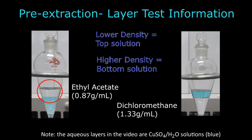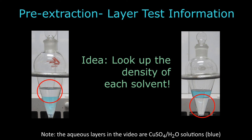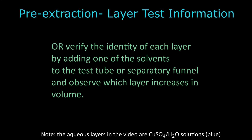Dichloromethane, however, has a density of 1.33 grams per milliliter, which means that when it is mixed with water, the organic layer composed of dichloromethane remains at the bottom, while the aqueous layer remains at the top. Be sure to look up the density of the organic solvent that you intend to use so that you can easily identify each layer. You can also verify the identity of each layer by adding one of the solvents to the test tube or the separatory funnel and observing which layer increases in volume.